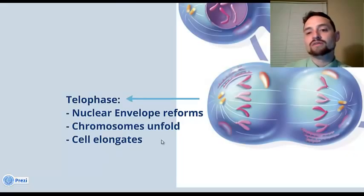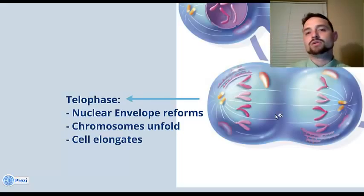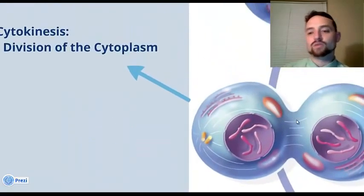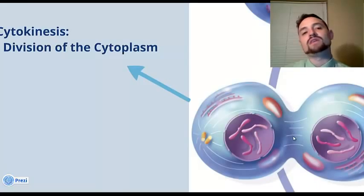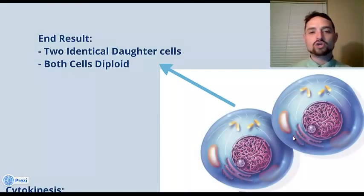Then we have telophase. The nuclear envelope will start to reform, and the cell will elongate and prepare to divide. And the chromosomes will unfold. But then you go into cytokinesis, where you start to get a pinching of the cytoplasm, or simply a division of the cytoplasm.